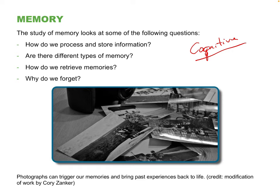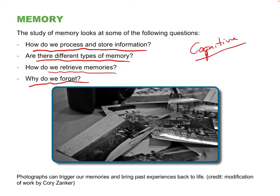Here are the main ideas we're going to cover: how do we process and store information, what kinds of memories are there, how do we retrieve them, and why do we sometimes forget things? For example, at a social function you meet someone, they tell you their name, and then a split second later the name is gone — like in one ear, out the other. We'll try to figure out why that is.